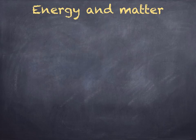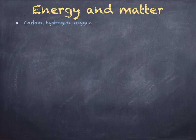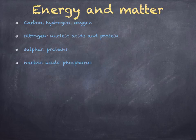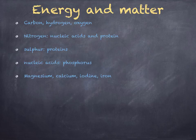Living organisms require not only a supply of energy, but they also need a supply of matter that is used to build their bodies. The elements in matter are carbon, hydrogen, and oxygen, which are contained in organic molecules. You also find nitrogen in nucleic acids and proteins. Some proteins may contain sulfur, whilst nucleic acids have phosphorus. Other elements needed in small amounts are magnesium, calcium, iodine, and iron. Atoms of these elements are used over and over again, or they're passed into other ecosystems.